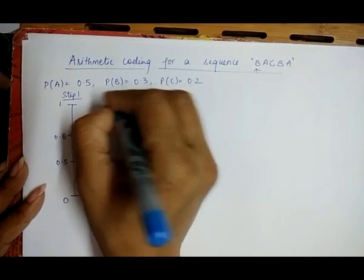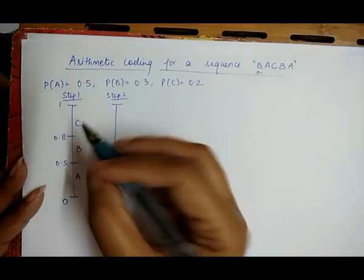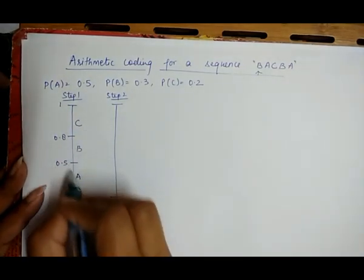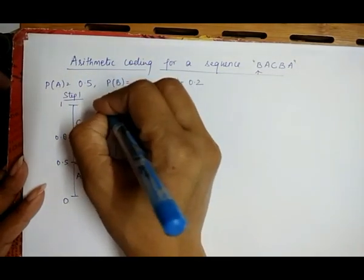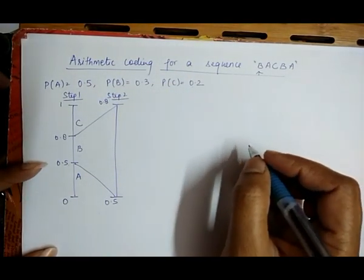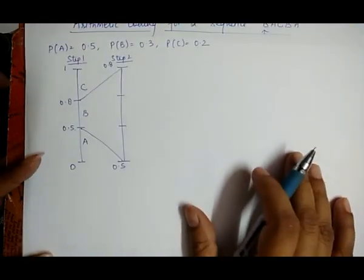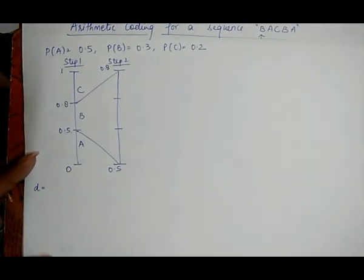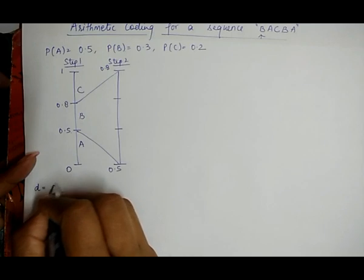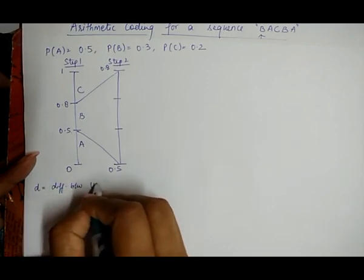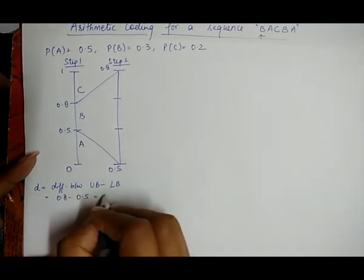In Step 2, we take the B symbol's interval as our new working range: lower limit 0.5 and upper limit 0.8. To find the sub-ranges of A, B, and C within [0.5, 0.8], we first calculate D — the difference between upper bound and lower bound: D = 0.8 − 0.5 = 0.3.